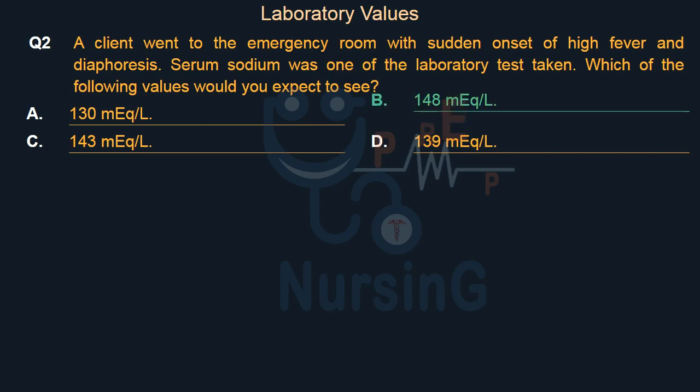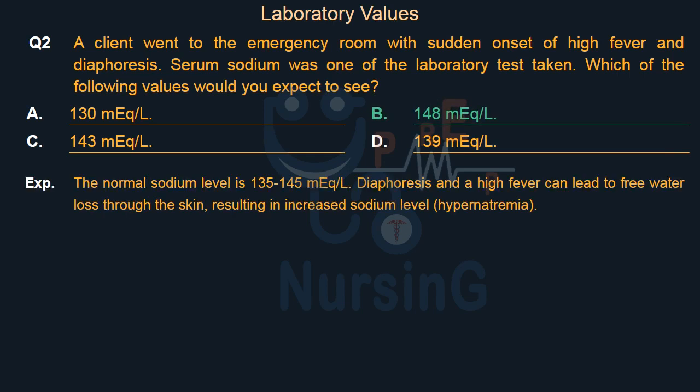The right answer is Option B: 148 mEq/L. The normal sodium level is 135 to 145 mEq/L. Diaphoresis and a high fever can lead to free water loss through the skin, resulting in increased sodium level, hypernatremia.